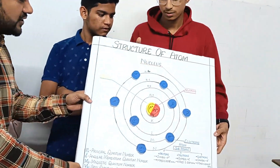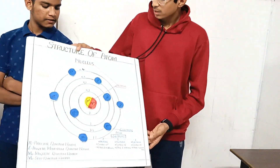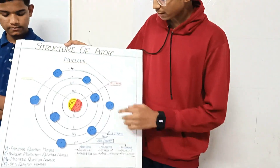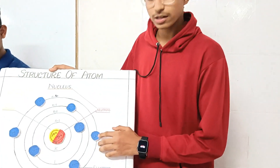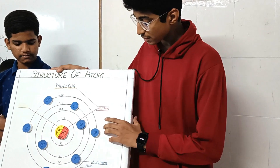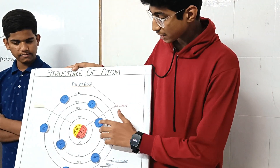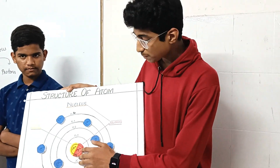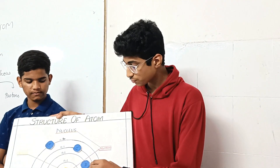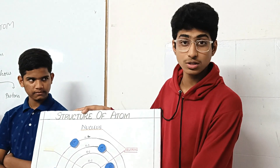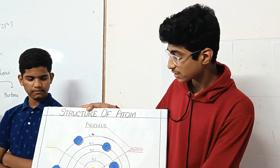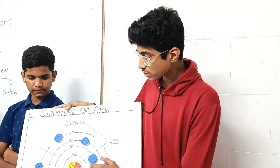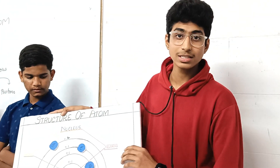In the atom, in the structure of the atom, electrons are present. Electrons are negatively charged and are symbolized by minus. At the center of the atom, the nucleus is present. The nucleus consists of protons and neutrons. Protons are positively charged, symbolized by plus. Neutrons are neutral and symbolized as N0.